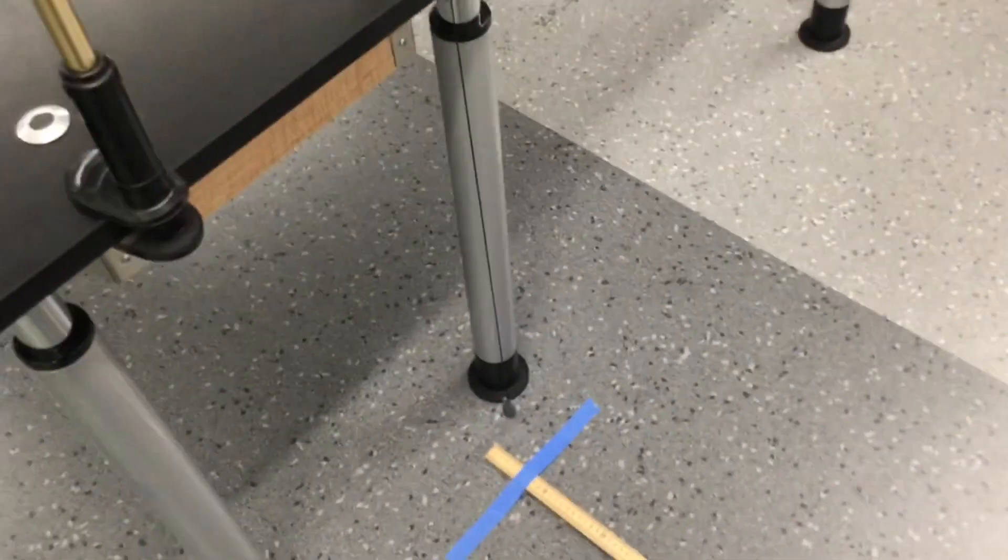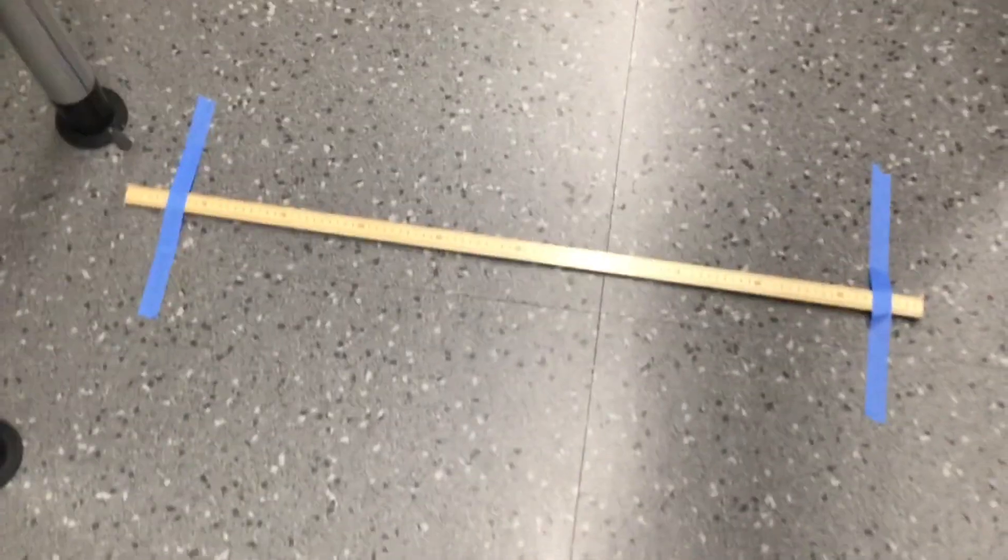Okay, so for each of these we're going to do a trial in normal speed video. And then we're going to do a slow motion right after so that you can record the landing location of the ball for each of the three heights. Alright, so let's get to it.